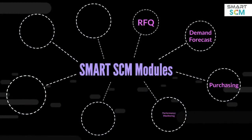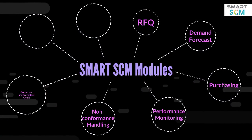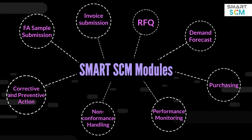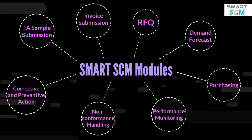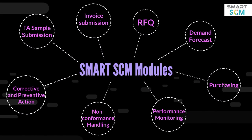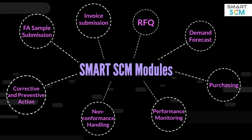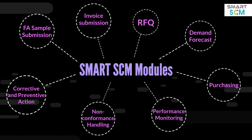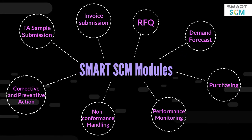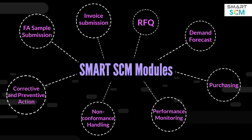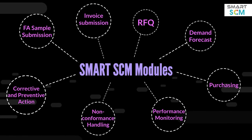Smart SCM consists of key modules such as RFQ, demand forecast, purchasing, supplier performance monitoring, non-conformance handling, corrective and preventive action, first article sample submission, and invoice submission.